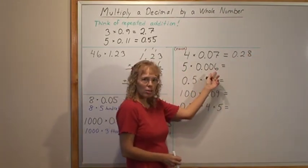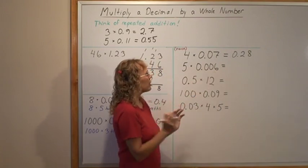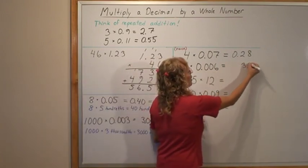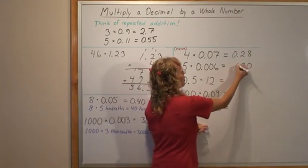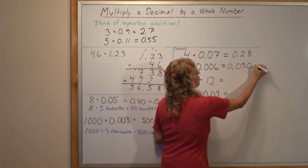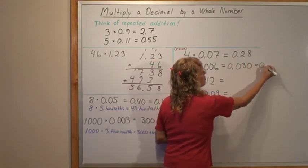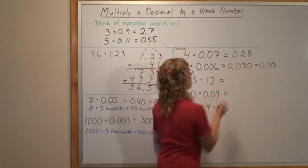5 times 6 thousandths. We will get 30 and it has to be thousandths so write it like this. Now this can be simplified.